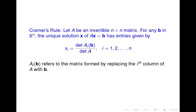Let's talk about Cramer's Rule. Cramer's Rule is actually one of the beautiful things in mathematics — it's a neat little idea and it's a way to solve a system of equations using only determinants. Here's the way it works: if A is an n by n matrix, then for any b in R^n, the unique solution x of Ax = b is given by this formula, which looks rather odd.